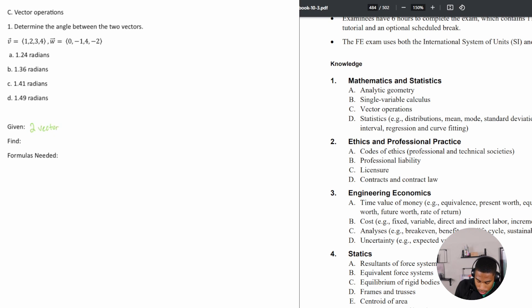All right, so what are we given? We're given two vectors, V and W. What are we trying to find? We're trying to find theta or the angle between the vectors.